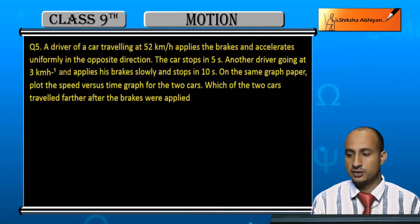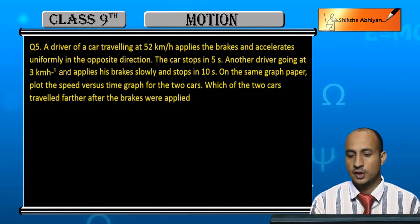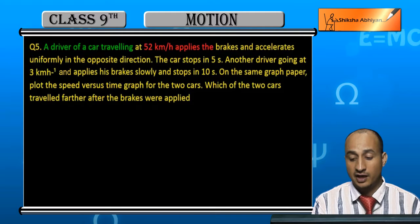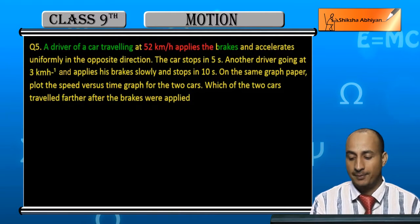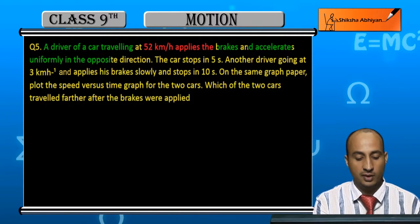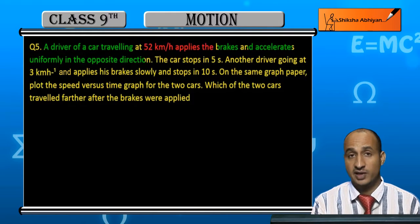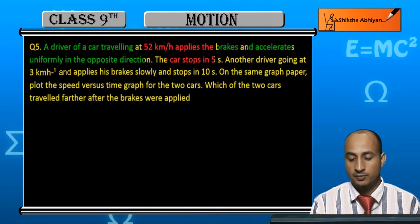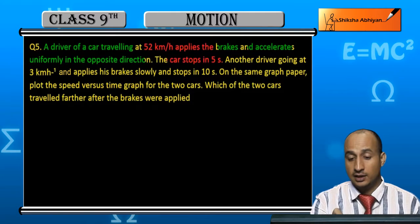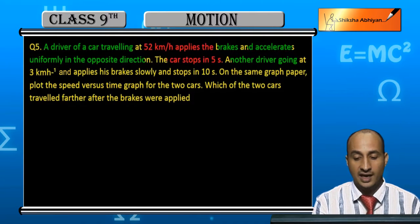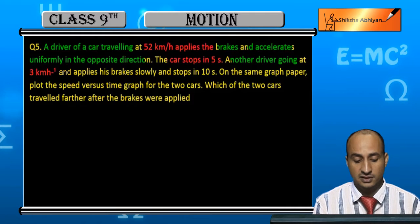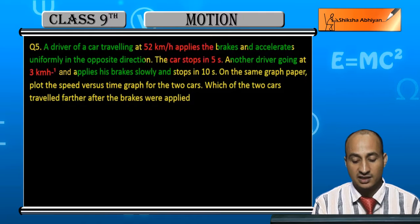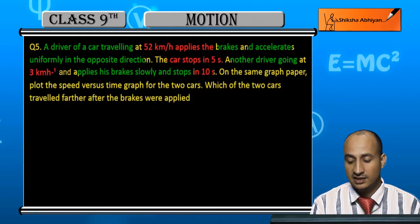Students, see the fifth question. A driver of a car traveling at 52 km per hour applies the brake and decelerates uniformly — the car stops in 5 seconds. Another driver going at 3 km per hour applies his brake slowly and stops in 10 seconds.